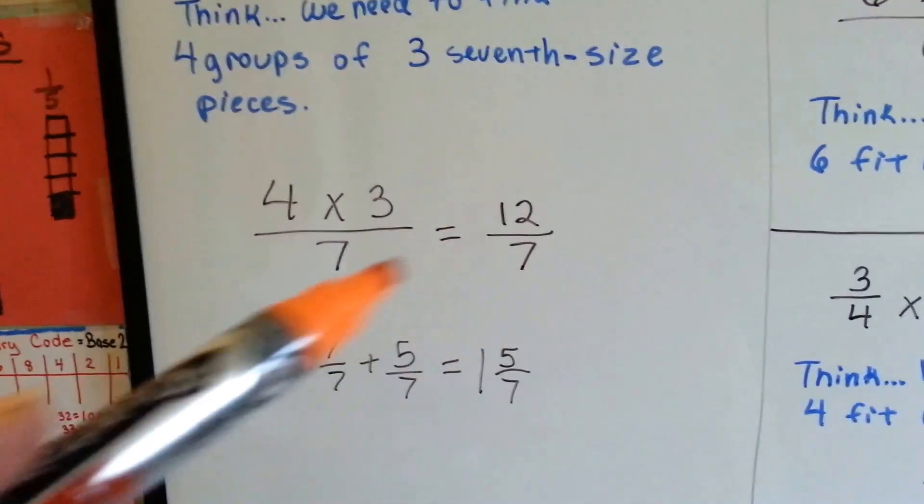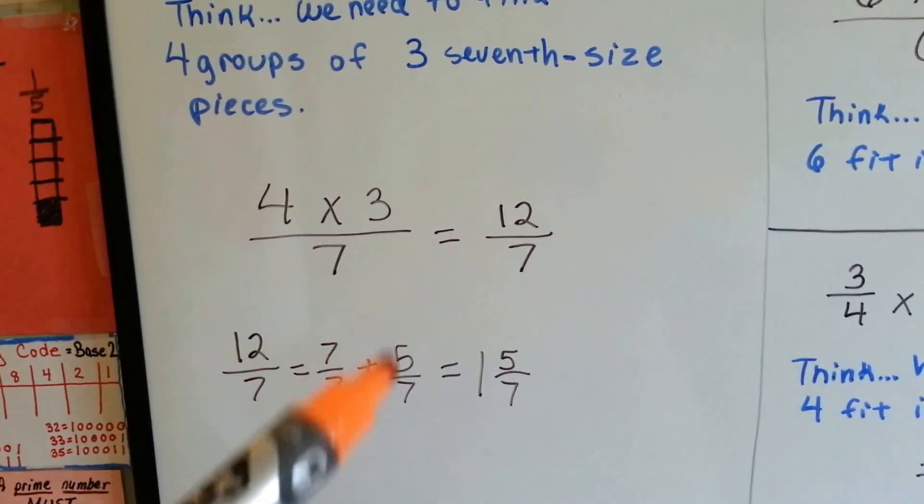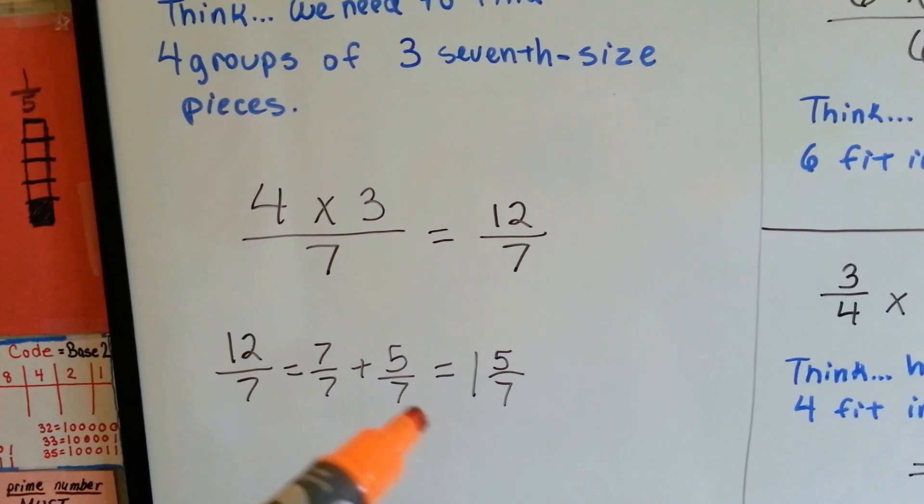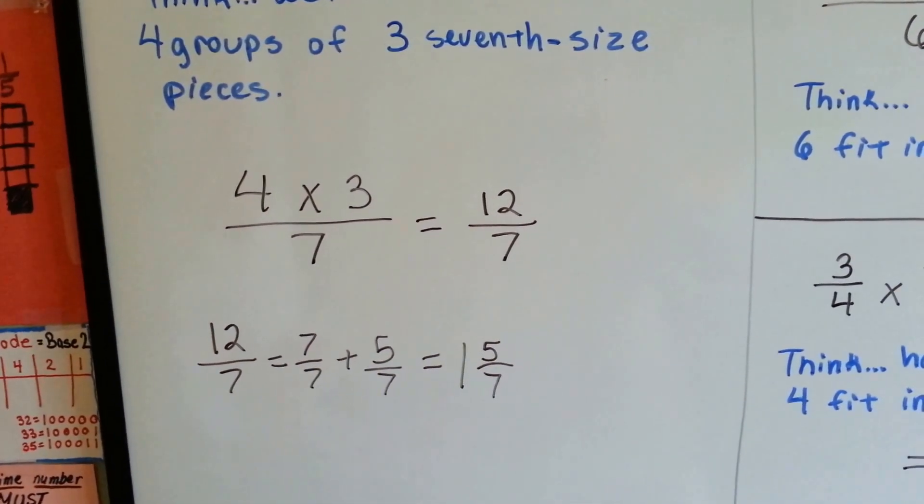Now we need to simplify this improper fraction. How many 7 sevenths can we pull out of here? 1 with 5 sevenths left over. That gives us 1 and 5 sevenths as our simplified answer.